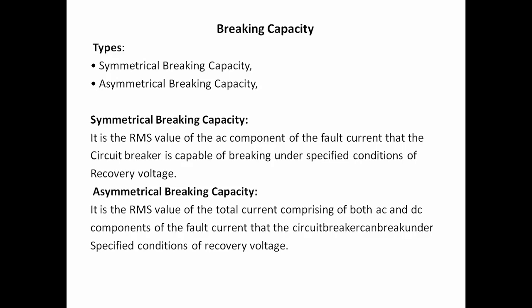Breaking capacity means the level at which the circuit breaker interrupts current when the contacts begin to open — the value at which the electromagnetic coil energizes and the moving contact separates from the fixed contact. Breaking capacity depends on two main things: symmetrical breaking capacity, which is the RMS value of the AC component of fault current the circuit breaker can break under specified conditions of recovery voltage; and asymmetrical breaking capacity, which is the RMS value of the total current comprising both AC and DC components of fault current that the circuit breaker can break under specified recovery voltage conditions.